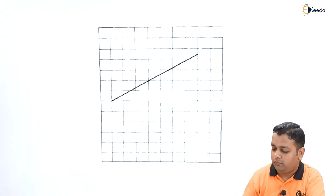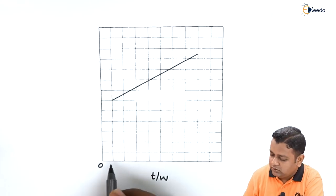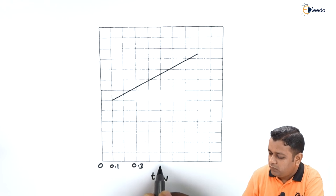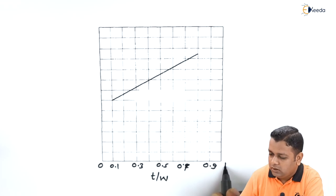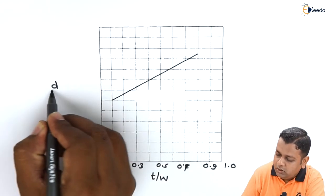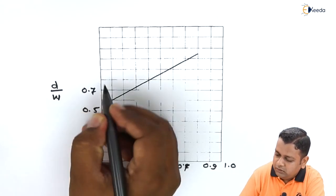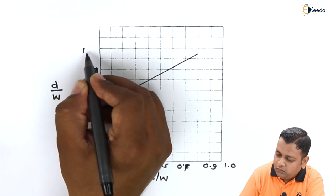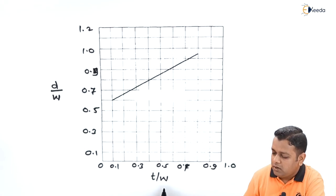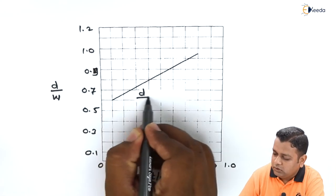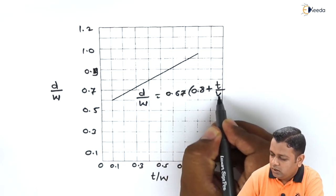Dividing both sides of equation 6 by w, we get d divided by w equals 0.67 times the quantity 0.8 plus t divided by w. A plot of d/w versus t/w shows the relationship between these two ratios. The horizontal axis represents t/w with markings from 0 to 1.0, and the vertical axis represents d/w from 0.1 to 1.2. This plot allows a better comparison of how the conductor shape is transformed from circular to rectangular.